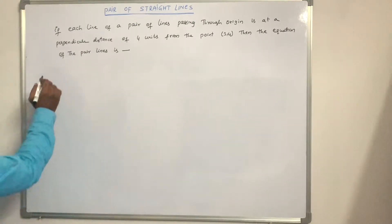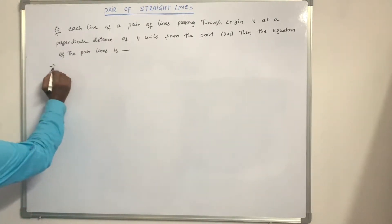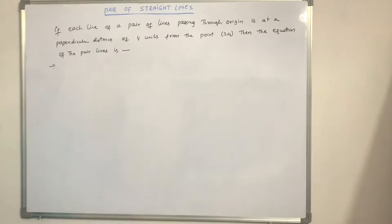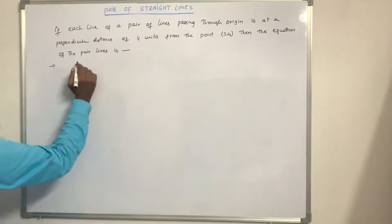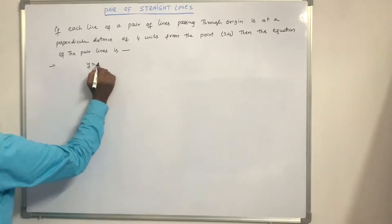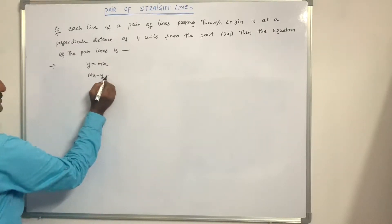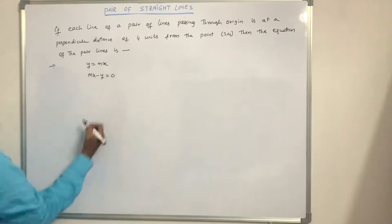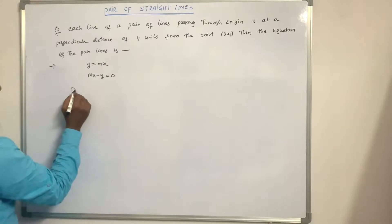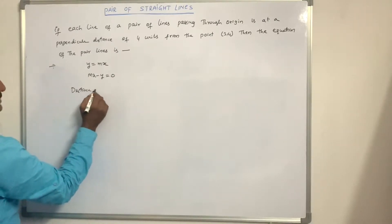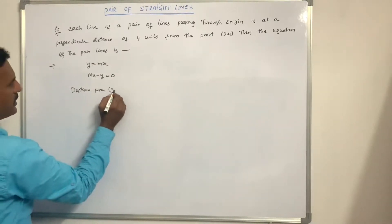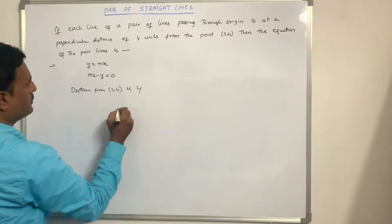If each line of a pair of lines passing through the origin is at a perpendicular distance of 4 units from the point (3, 4), then find the equation of the pair of lines. The equation of a line passing through the origin is y = mx, or mx minus y = 0. The distance from the point (3, 4) is 4.